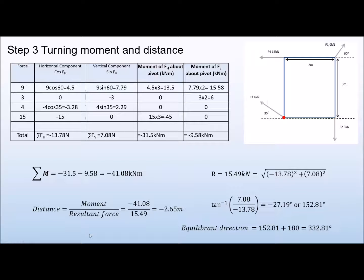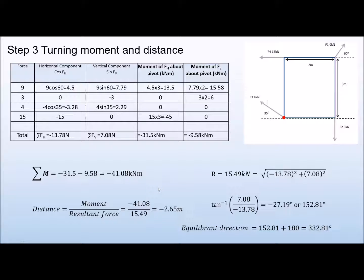That completes the problem as far as we need to go for the P1 criteria. When reporting the magnitude and direction of the resultant and equilibriant, give the angle with respect to the horizontal zero-degree line. Also note that the sum of the turning moment was −41.08 kNm, indicating an anti-clockwise net effect on the force system. Show all your workings laid out in this table format — it makes it easy to review and spot any mistakes. Thanks for watching.